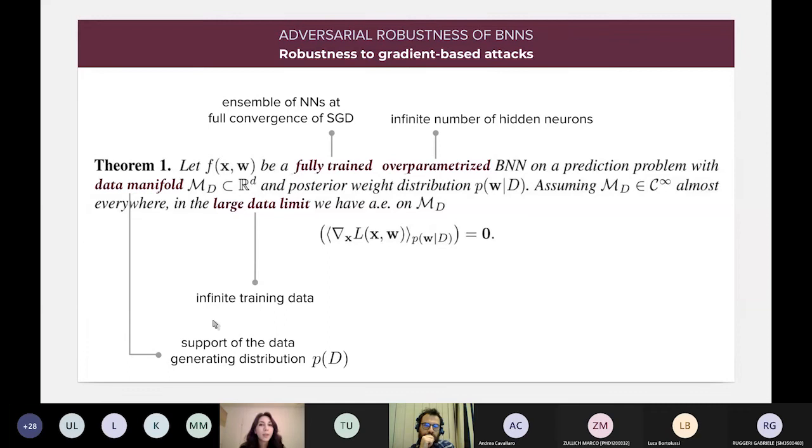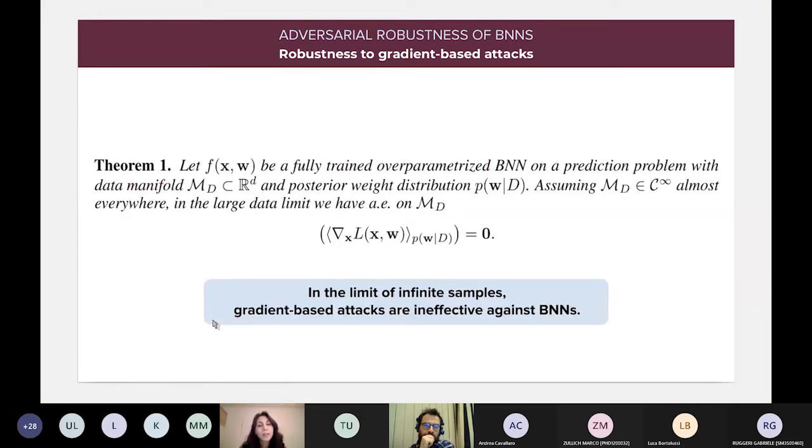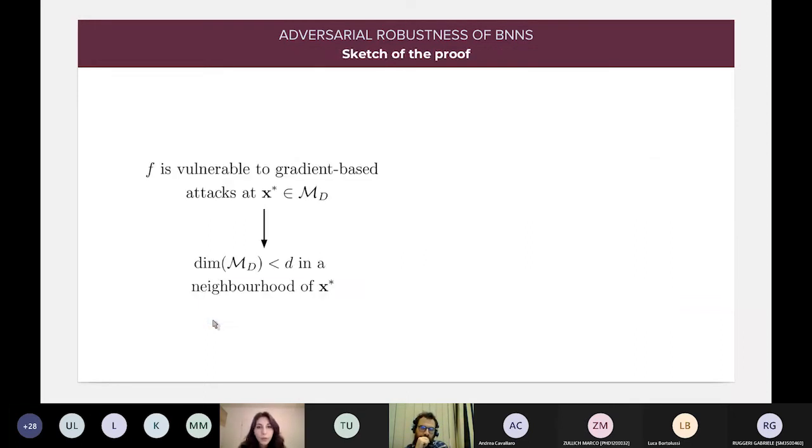So, we have a few very strong assumptions for proving this theorem, but in the end, the result is really strong and important. In fact, this theorem means that in the limit of infinite samples from the posterior, all gradient-based attacks are ineffective against Bayesian neural networks. And now I would like to show you a few experimental results that we got to prove that even though the assumptions are very strong, in practice, we observe this vanishing behavior on real data sets. So, let me skip the proof.